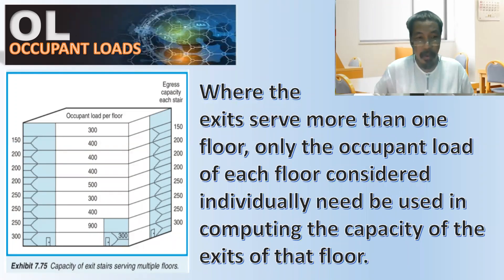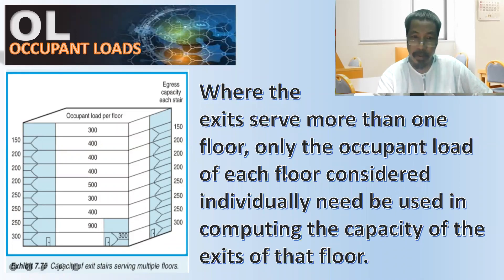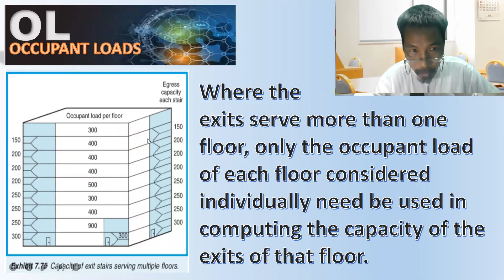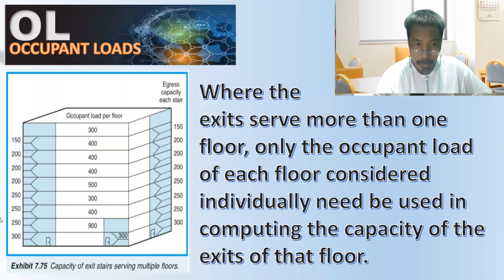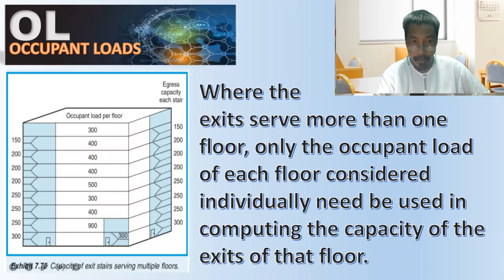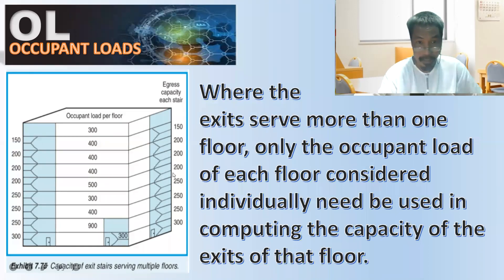The key principle is: where exits serve more than one floor, only the occupant load of each floor considered individually must be accounted for. Do not add the loads of adjacent floors together. You only consider one floor at a time and take the higher value. For example, do not add 500 and 300 to get 800 - only consider 500 because it is higher. The resulting exit capacities per floor are: 150, 200, 200, 250, 250, 250, 250, and 300.